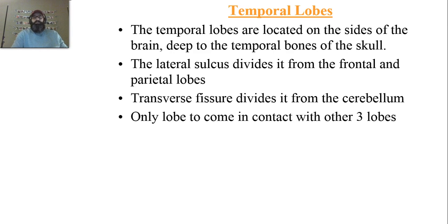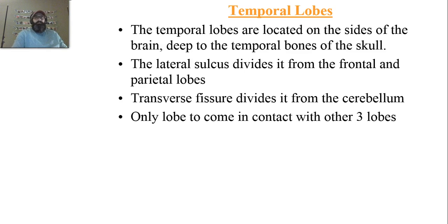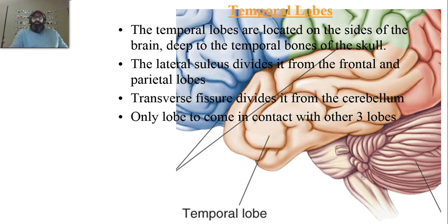The temporal lobe is the only lobe of the brain that actually comes in contact with the three other lobes — I'm simply stating it has physical contact with each of the others from a superior anatomical view. If you're looking at the lateral view of the brain, that's where you'll find the temporal lobes. You can slightly see them from a superior view, posterior view, and anterior view, but the best view is from a lateral view.